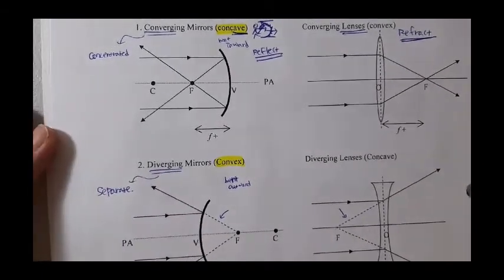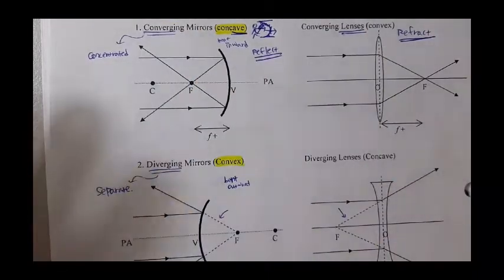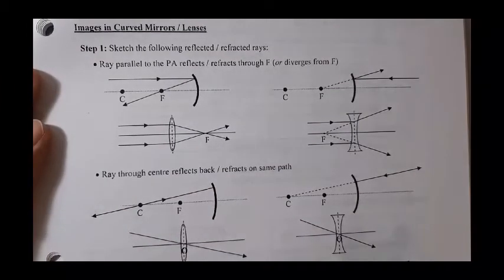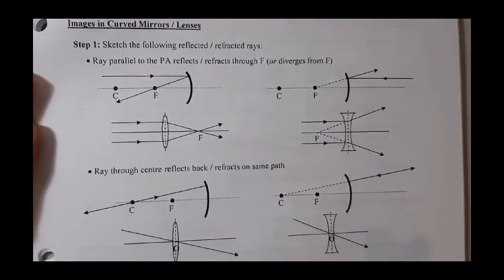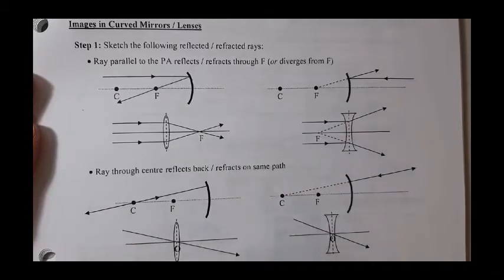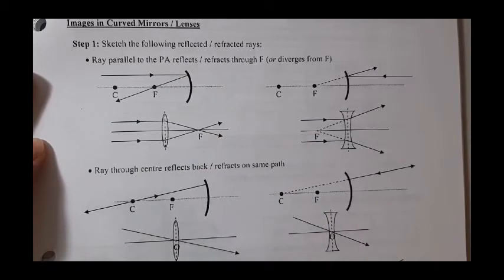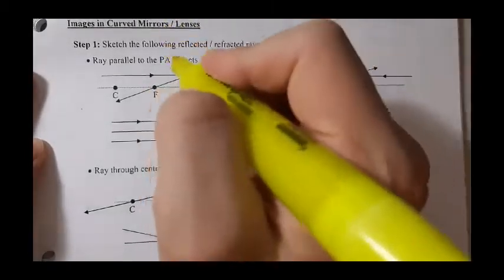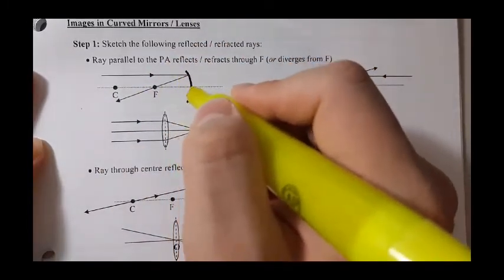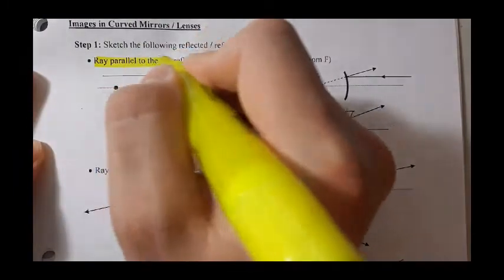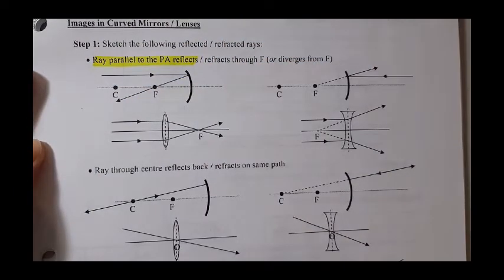Explaining everything in a diagram is really tough in this lesson, so I'm going to do quite a lot of examples. But before we do, I'm going to explain the steps. What steps should you take to predict the image's size, orientation, and whether it's real or virtual? Once we have an image on the diploma exam, the dotted line in the middle — the exact center of the mirror or lens — is known as the principal axis. The first radiation you draw must always be parallel to the PA.